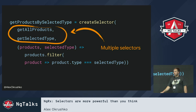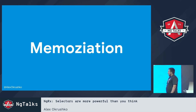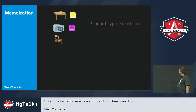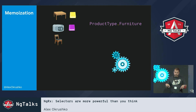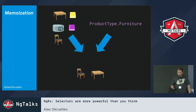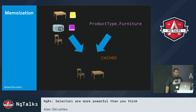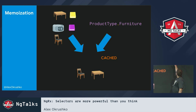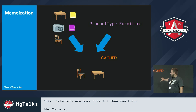This function is called the projector function. The other big feature of selectors is memoization. Say we have those same products and the selected type is furniture. When they enter the selector for the first time, they are processed — the projector function is executed — and we get a result, for example the furniture items filtered out. But the second time the selector is called with exactly the same inputs — the same products and the same selected type — the projector function is not executed anymore. It gives us a cached result back.